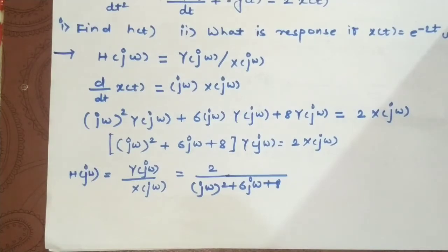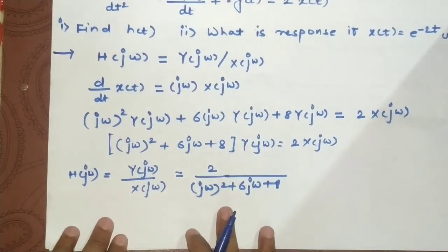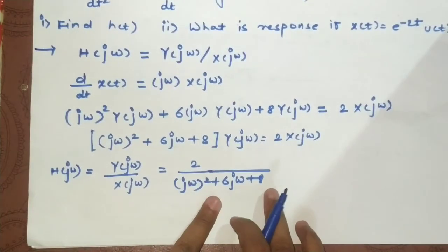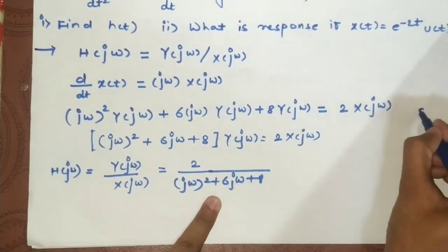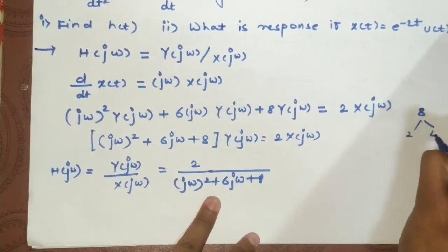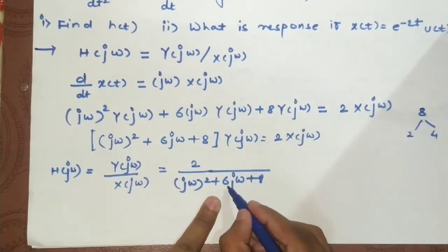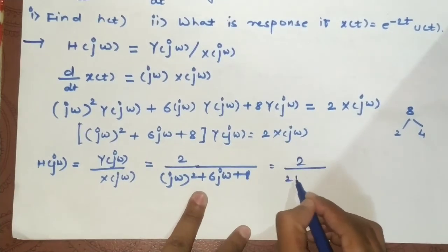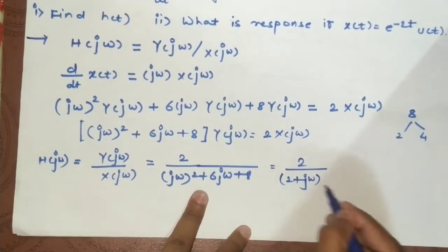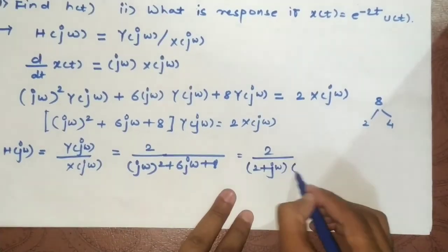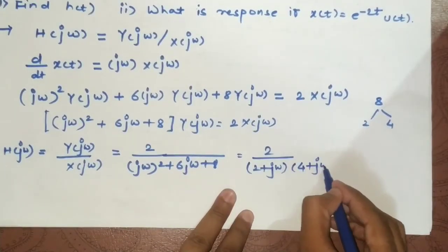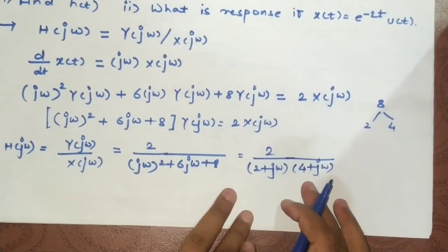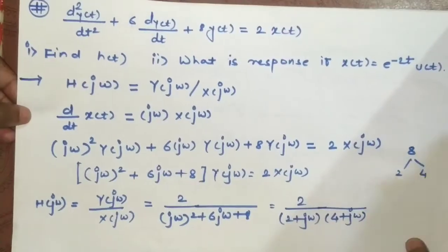To take the inverse Fourier transform, we need to simplify this term. It is in the form of a quadratic equation. We can find the roots of the denominator: 2 and 4, because 2 × 4 = 8 and 2 + 4 = 6. So this equals 2 / [(2 + jω)(4 + jω)]. Since the denominator is in multiplication form, we can apply partial fraction expansion.